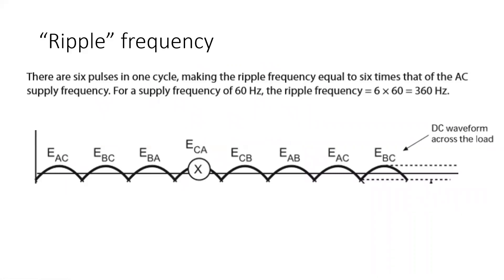Again, ripple frequency can be calculated and because we have six diodes, six times 60 gives me an output ripple frequency on the DC of 360 hertz.